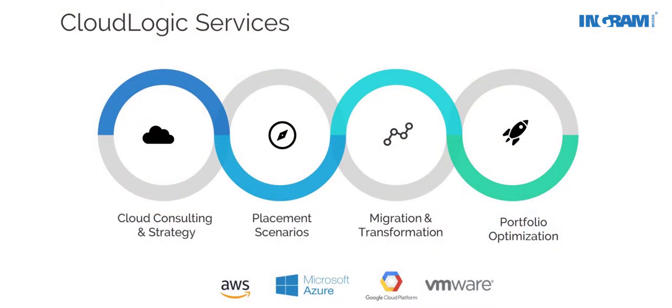Thanks, Jake. CloudLogic was formed by principals from a top 50 VAR who ran the consulting business there. The team has been recognized by Gartner for their innovation and expertise in migration since 2001, as well as received Forbes awards as being one of the best management consulting firms for multiple years. At CloudLogic, we focus on four core offerings: enablement, placement, migration and transformation, and portfolio optimization. Portfolio optimization is what directly addresses the needs you've identified today, helping clients unlock savings opportunities to help their business in these difficult times.